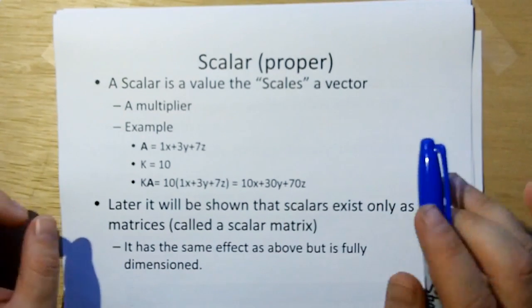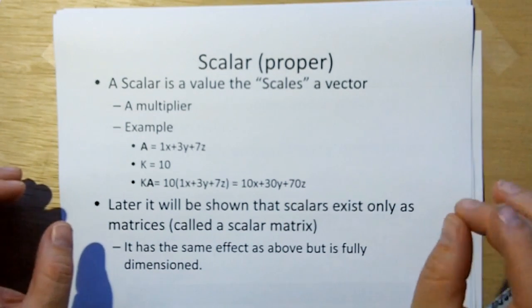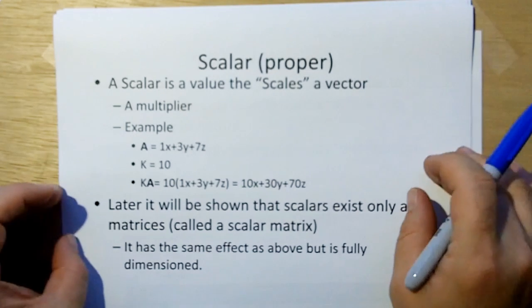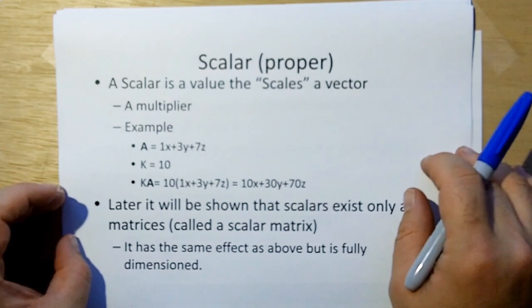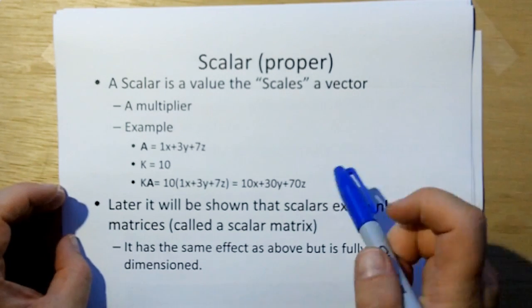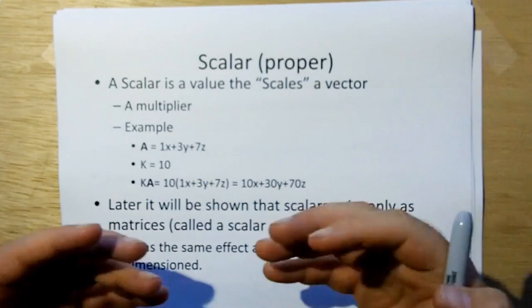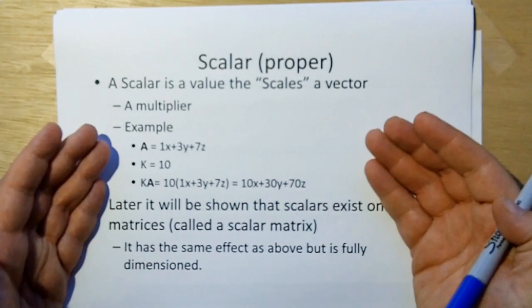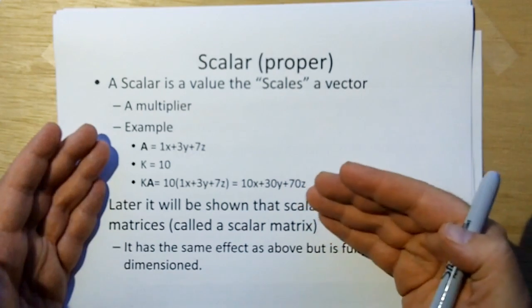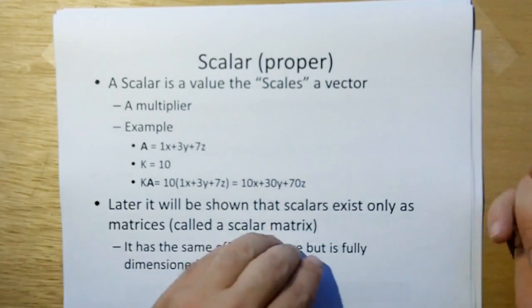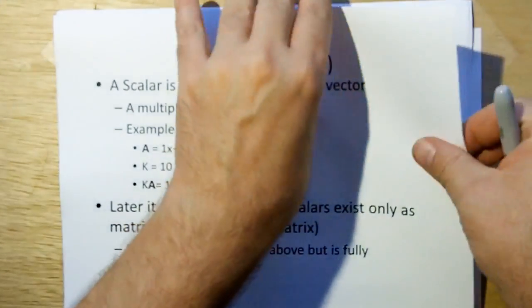Later I'm going to show when we get into Q vectors that scalars exist only as matrices, which is called a scalar matrix. It has the same effect as this above, but representing it as a matrix opens up possibilities for you, and it is the proper definition. We'll get to that when we get to Q vectors later on.